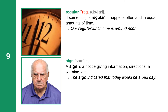Next one: regular. Regular has three syllables. Regular is an adjective. If something is regular, it happens often and in equal amounts of time. A regular lunchtime is around noon.